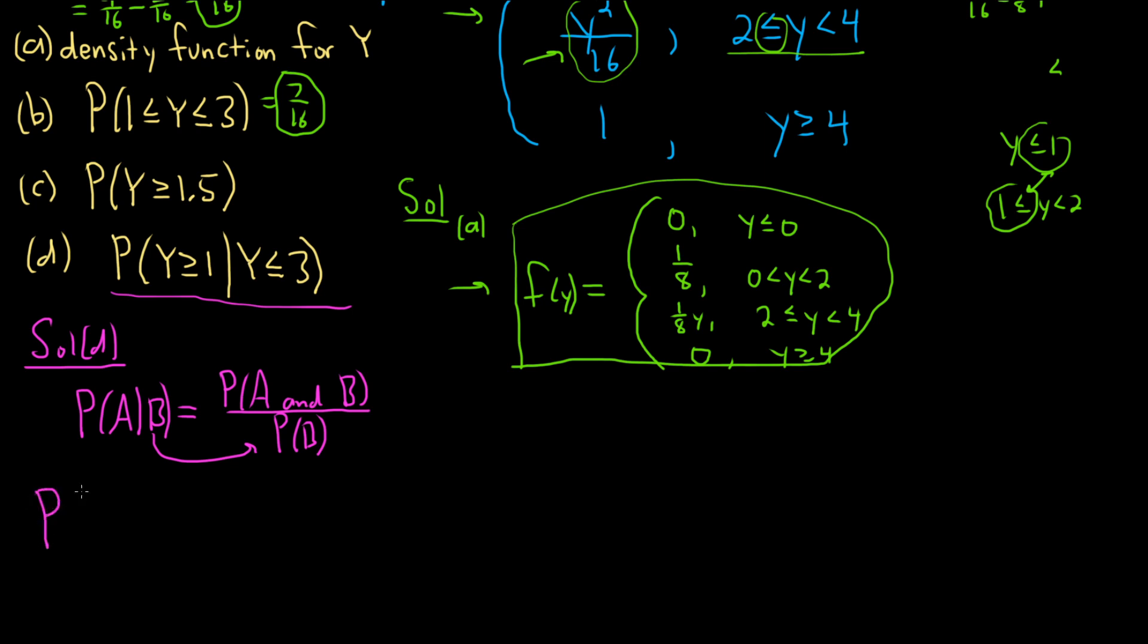So the probability that Y is greater than or equal to one, given that Y is less than or equal to three. So let's use our basic formula. This is P of Y greater than or equal to one and Y less than or equal to three, all over P of, because that one goes on the bottom, whatever is here goes on the bottom, always, every single time. Now check this out. When you're anding these, if you just think about it, it should make sense. So Y is bigger than one and it's less than three. Oh, so if it's bigger than one and it's less than three, that means it's between one and three, bigger than one and less than three. And over here, it's P of Y less than or equal to three.